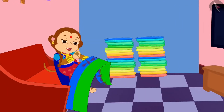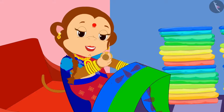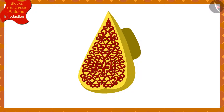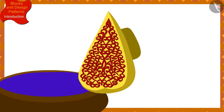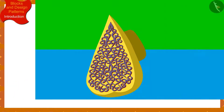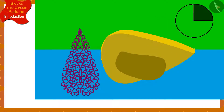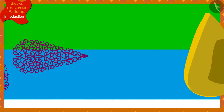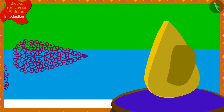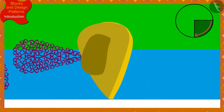Banno returned home and started designing a saree for Chanda. Banno has a block of this design. She first dipped her block in a box of color and made an impression on the saree. She then made a second impression by dipping the block in the box of color again, this time rotating the block a quarter in the clockwise direction. Banno continued to make the design on Chanda's saree by every time dipping the block in the box of color and rotating it a quarter from the previous impression.